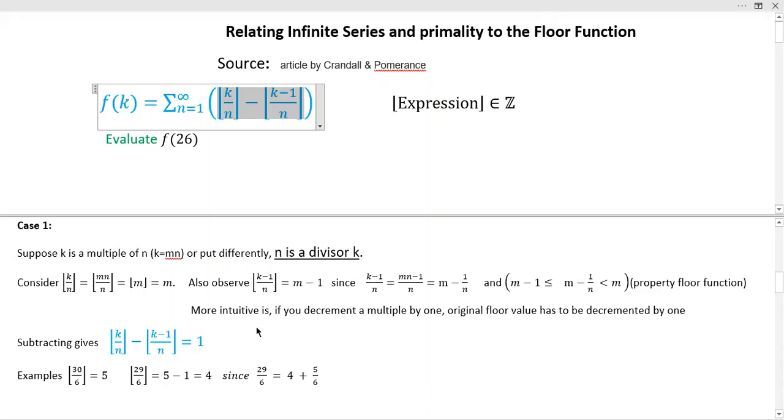And so when you subtract these two, when you subtract M minus M minus one, you get this statement right here. So this is the result anytime that K is a multiple of N or N is a divisor of K. This is the result. You're always going to get one if K is a multiple of N.